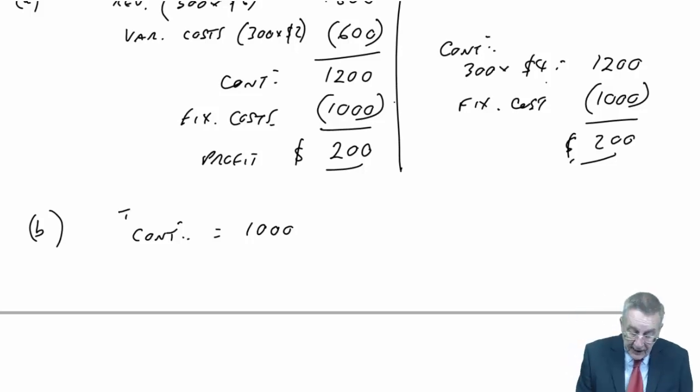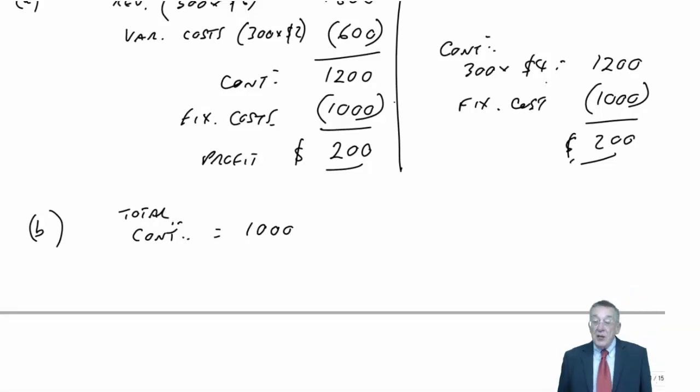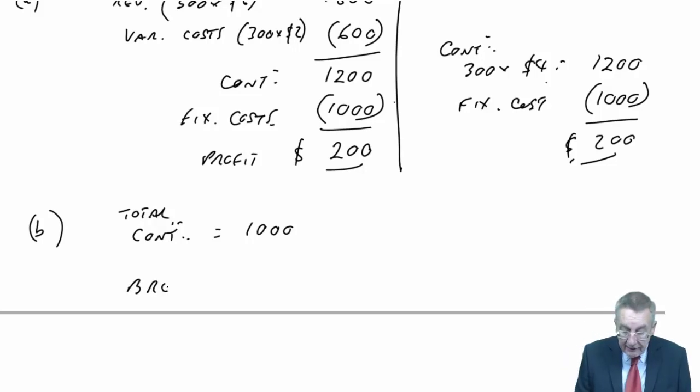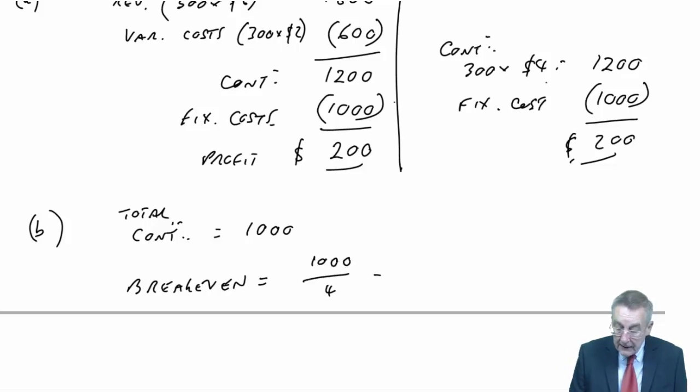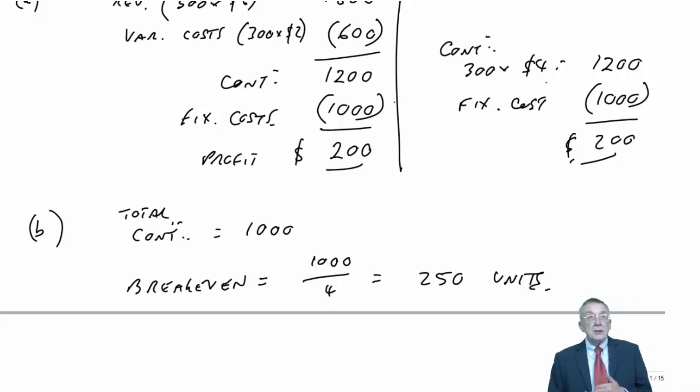That's the total contribution we need. We know the contribution per unit is $4, so to achieve break-even, to get a contribution of $1,000 in total at $4 a unit, we need to sell 250 units. If we sell 250 units, zero profit, zero loss. If we sell more, we make a profit. If we sell less, we make a loss.